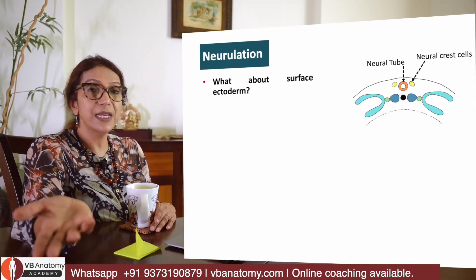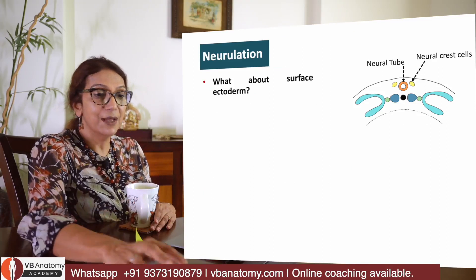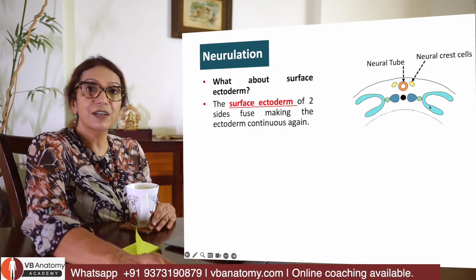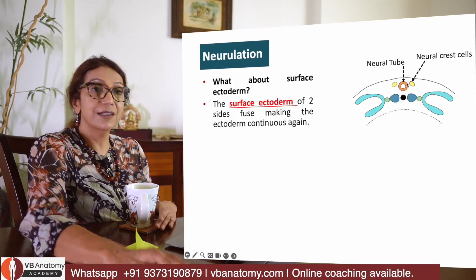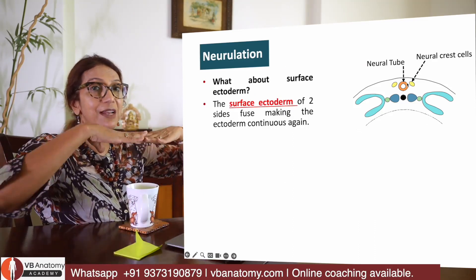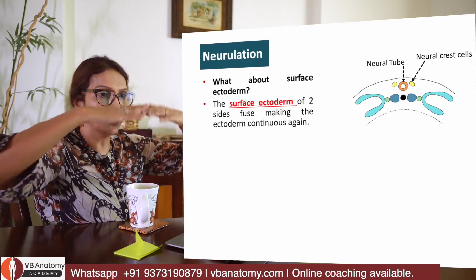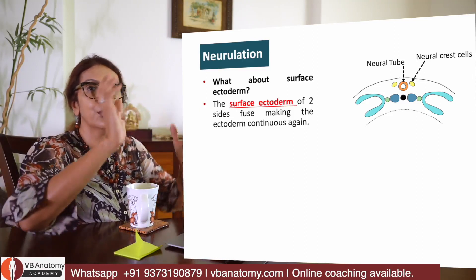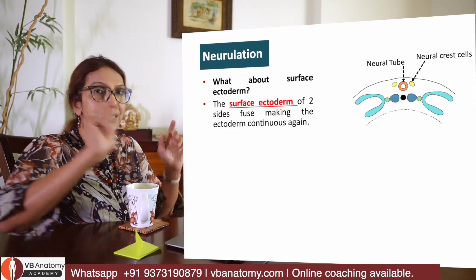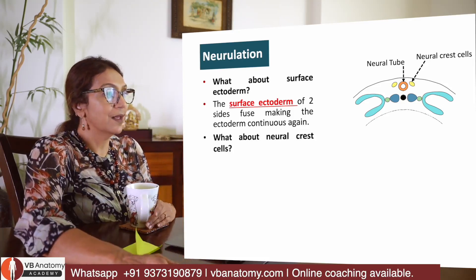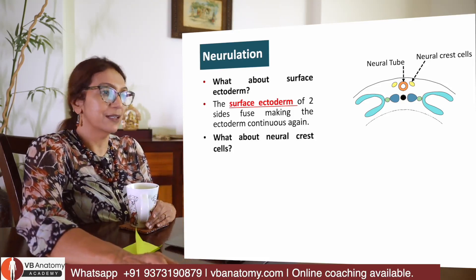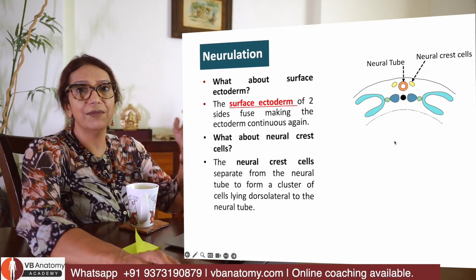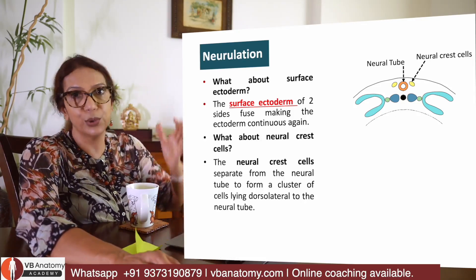At this point I have a neural plate and neural crest cells. The surface ectoderm, which had developed the thickening, fuses to form one complete surface once these structures depress into the mesoderm. Neural crest cells migrate laterally and have their own development — that is a different chapter altogether.